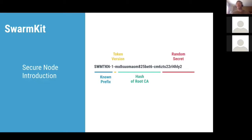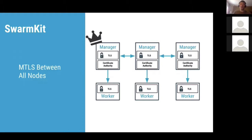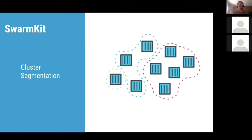It starts with secure node introduction: every node in a Docker swarm has its own cryptographic identity tied to the swarm ID, the node ID, and the node role — whether it's a manager or a worker. With that cryptographic identity we can do mutual TLS between all the nodes, meaning all communication is encrypted and certificates are rotated. We also have labels that allow cluster segmentation — I can schedule containers only on hosts that have specific security characteristics.